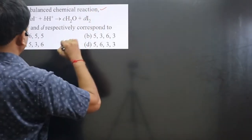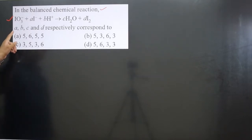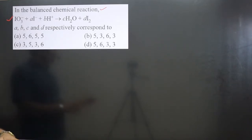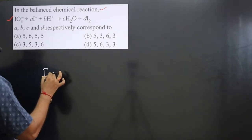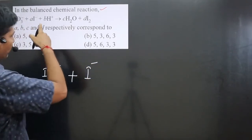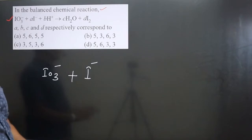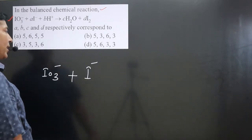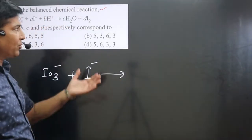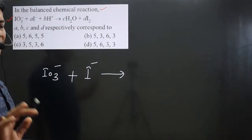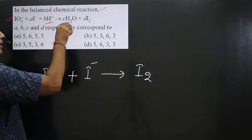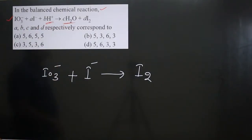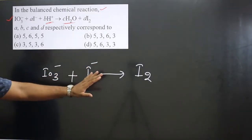The question gives an unbalanced chemical reaction in which we have to find out A, B, C, and D respectively. First, we balance the equation and then find the coefficients. We have IO₃⁻ (iodate ion) plus iodide ion I⁻. H⁺ ion means the equation is balanced in acidic medium — we do not include H⁺ at the start; we include it later when balancing oxygen and hydrogen. On the other side we have a water molecule and I₂. This is the actual equation we have.